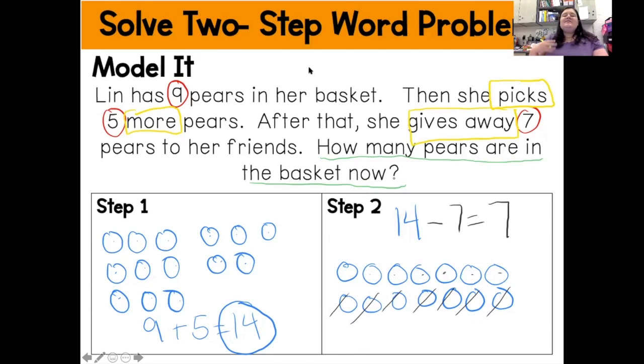All right. So the second strategy that I can use is model it. So it's very similar to drawing out a picture. This time for my model, I'm just going to use the same circle. So there are the nine pears that she had to begin with. And then she picked out five more for a total of 14, which I have down here at the bottom. And then for step two, I drew out 14 more circles. So taking my same counters that I have, 14 more circles I have, and then I'm going to take away seven. And that takeaway seven represents the seven pears that she gave to her friends. And now they want to know how many pears are in the basket now, which would be those pears right here. There are seven pears left.